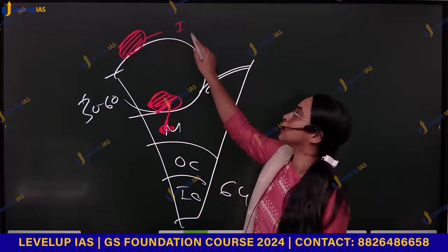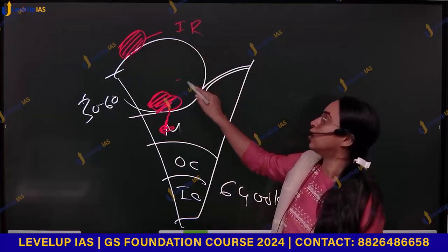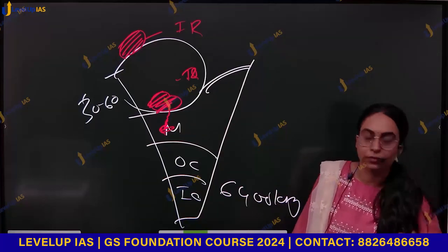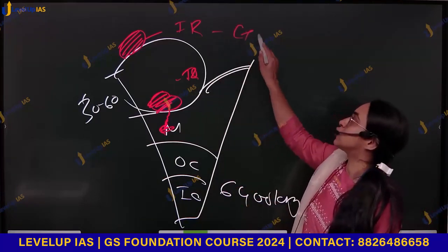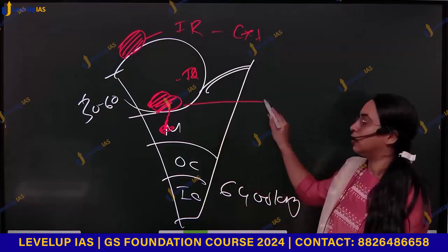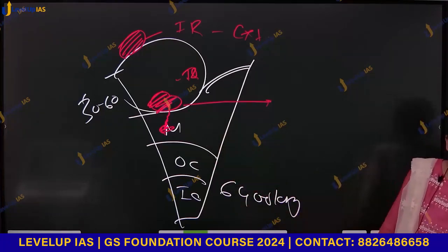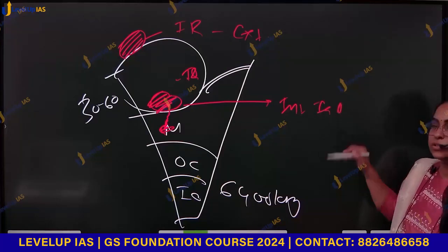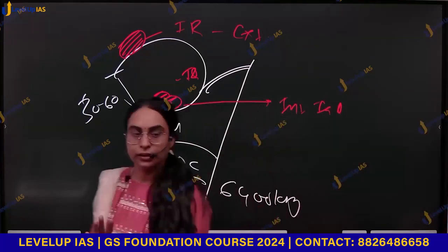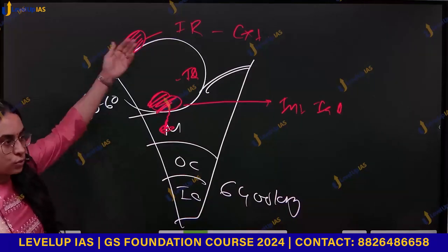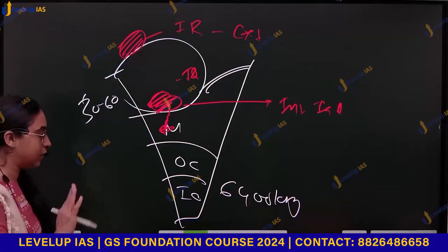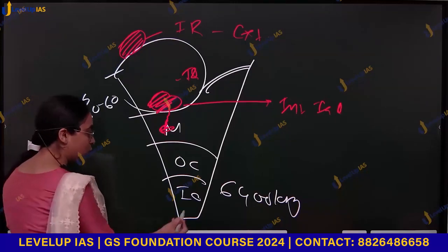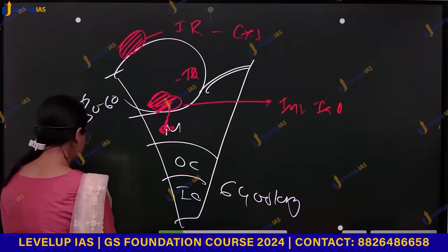The igneous rocks formed by solidification above the crust are called extrusive igneous rocks. The rocks that solidify within the crust are called intrusive igneous rocks. On the basis of location, there can be these two types of igneous rocks.